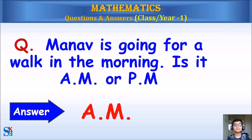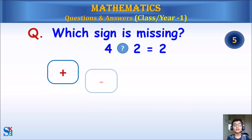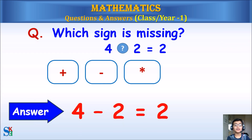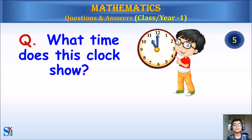Which sign is missing? 4 plus 2, 4 minus 2, or 4 times 2 equals 2? Answer: 4 minus 2 equals 2.